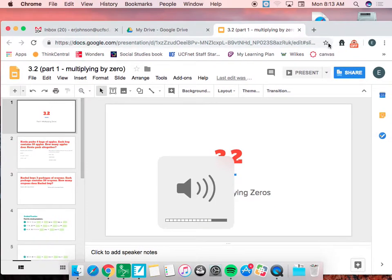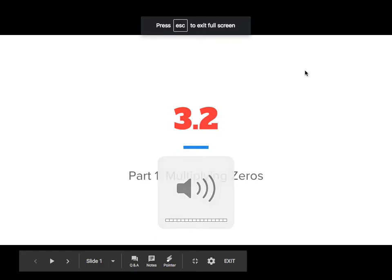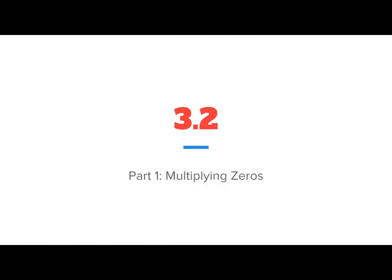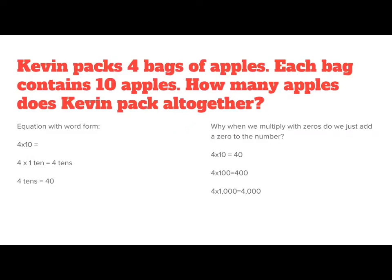Hi guys, today we are going to be watching a video about multiplication — specifically multiplying with zeros. What we're going to do is take what we already know about multiplication and place value and try to multiply bigger numbers like tens and hundreds, breaking apart and decomposing numbers to make multiplication problems a little bit easier. So we're going to start with a problem.